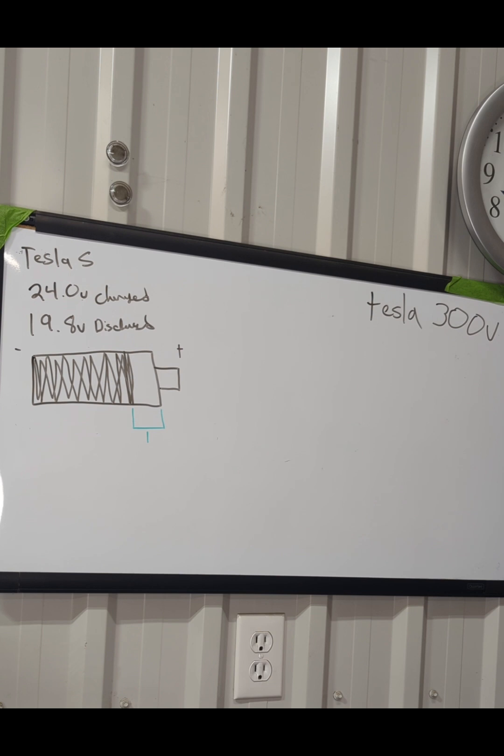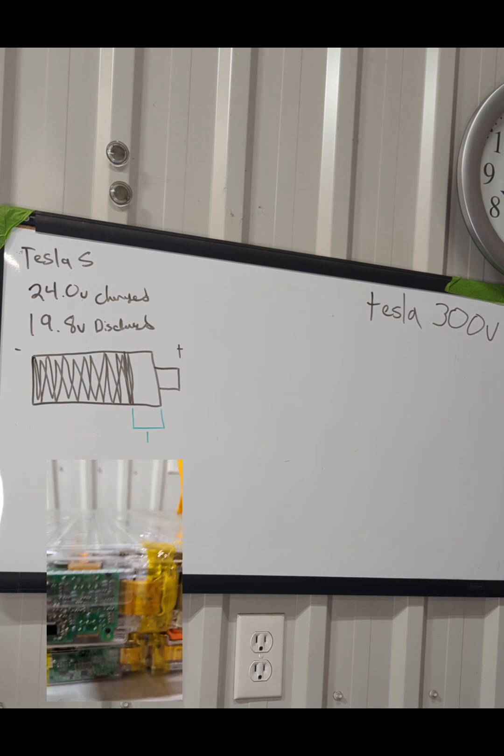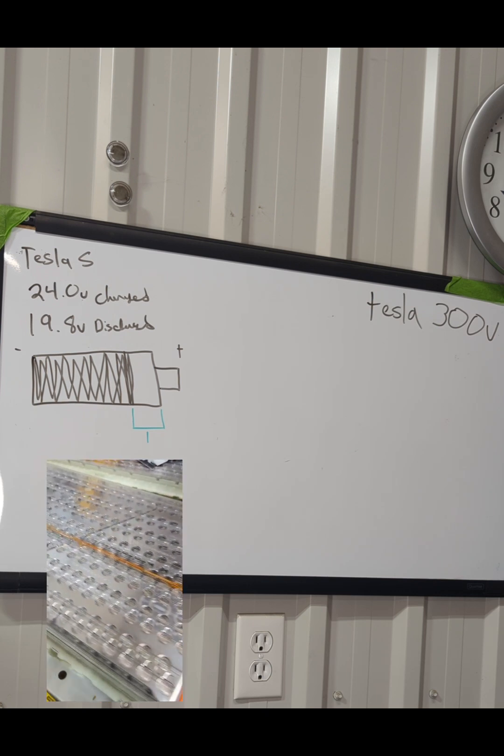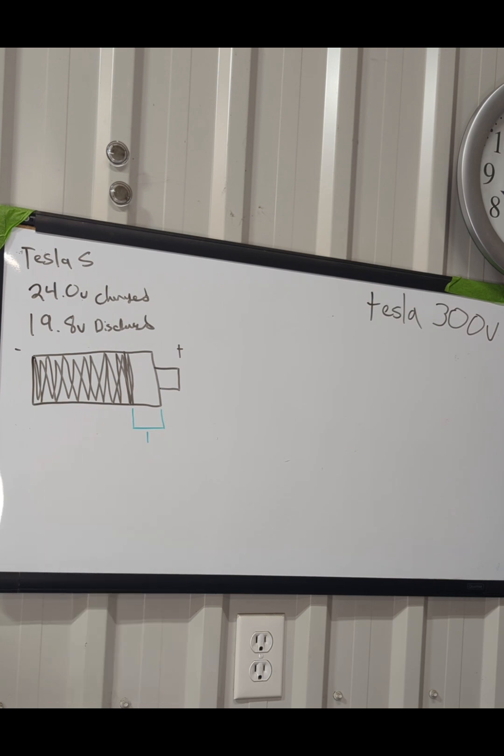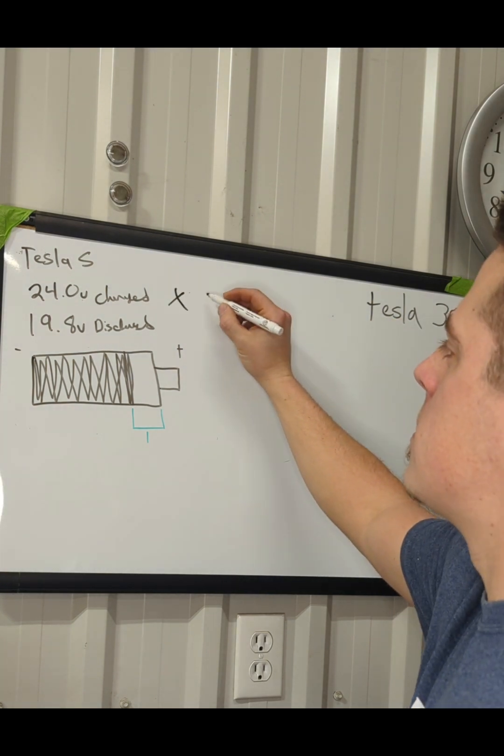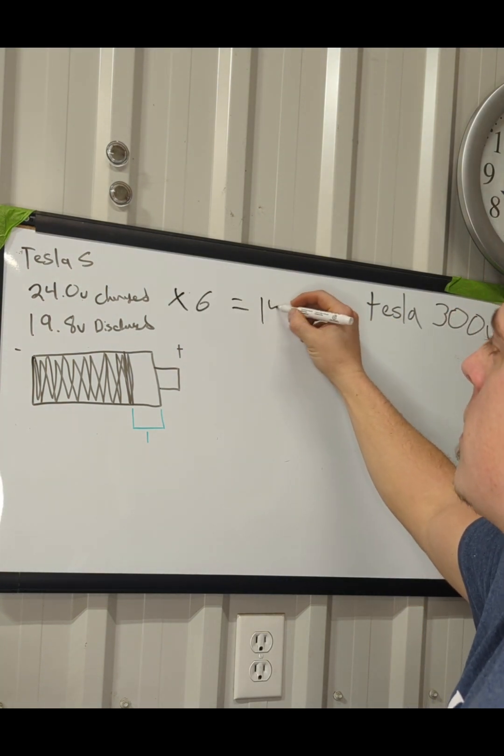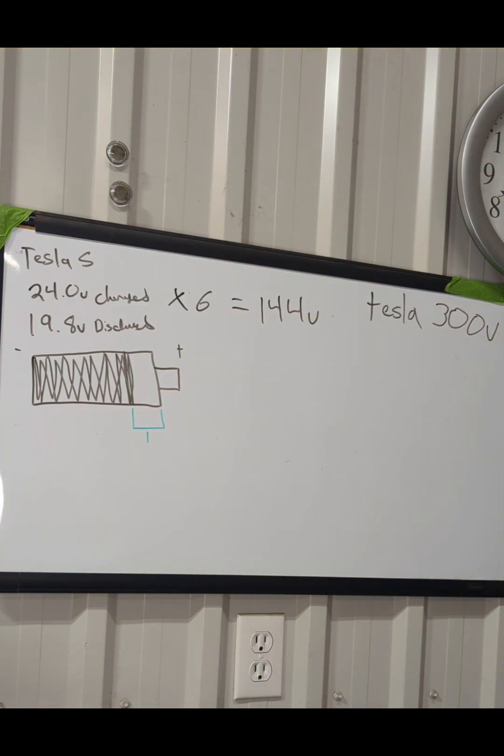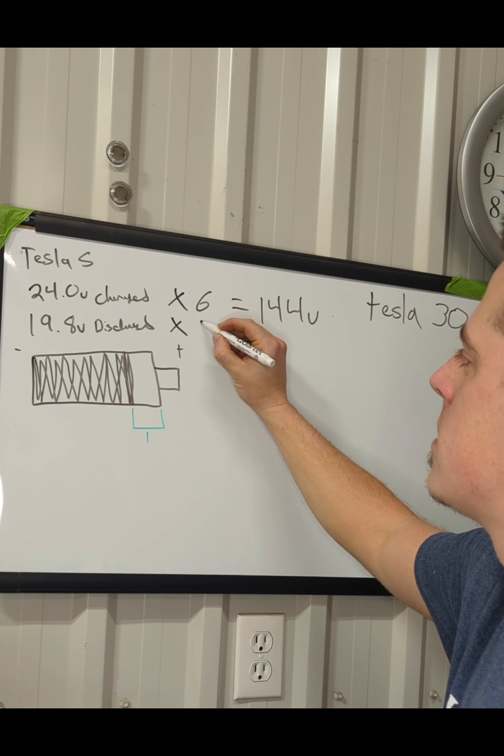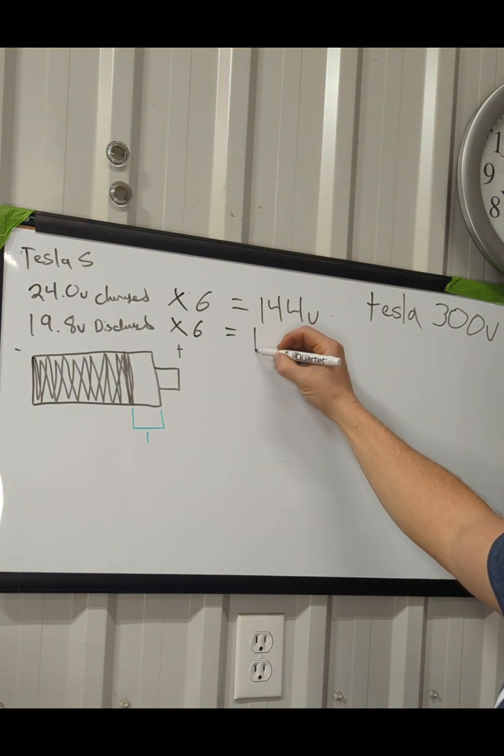How many batteries can I fit in this car reasonably? Because they're about 55 pounds of cell, this is a pretty small car, and I want some form of a decent range. So I ended up doing six cells. If I take this and times it by six, I get 144 volts, and if I take the discharged amount times by six, I get 118.8 volts. So my system voltage that I'm gonna use on this car is 144 volts.